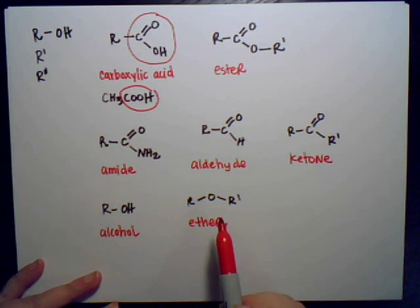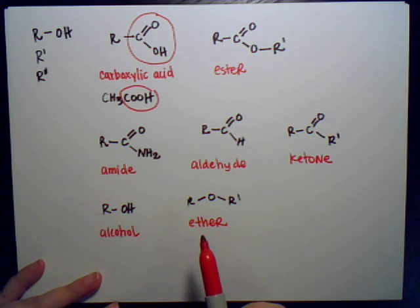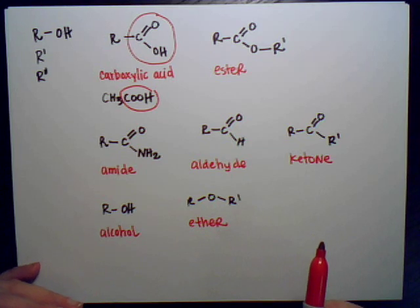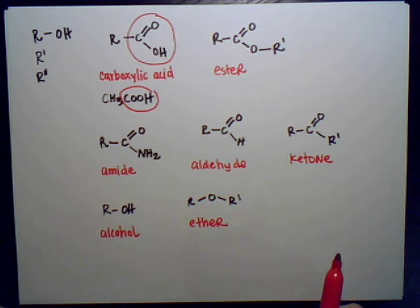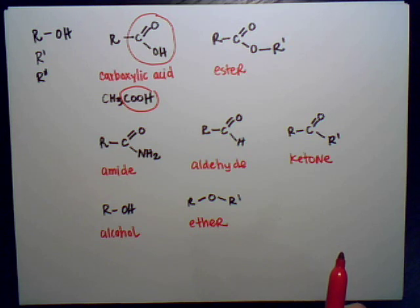A halide, as mentioned previously, would just be any of your elements from group seven — fluorine, chlorine, bromine, and iodine — attached to your alkane. Those are the major functional groups you might run into, so make sure to take note of these when you are naming your alkanes.